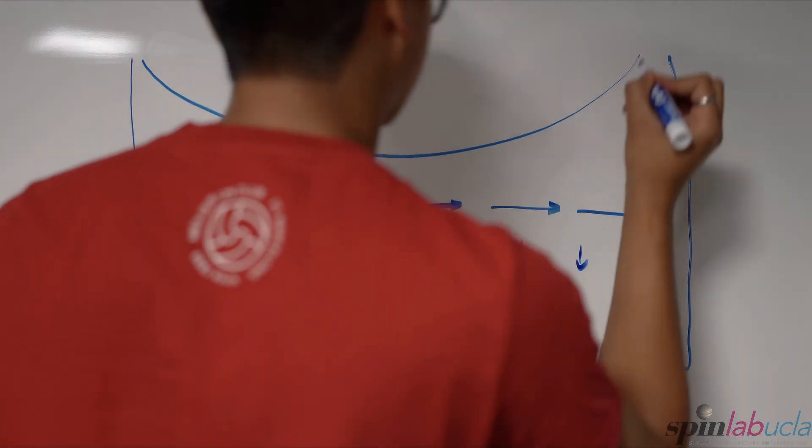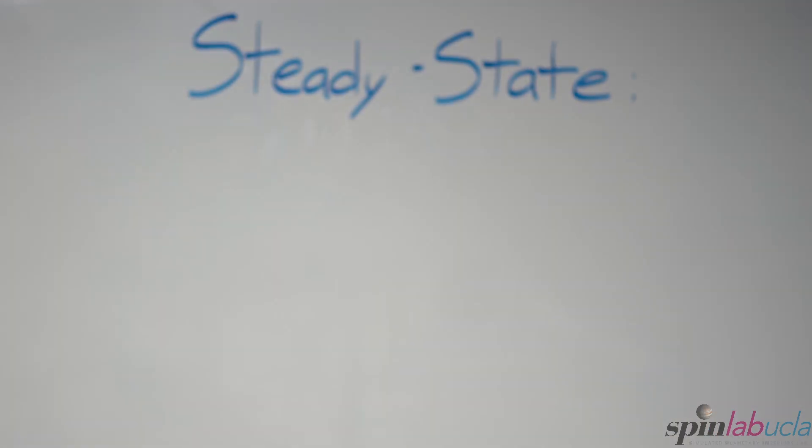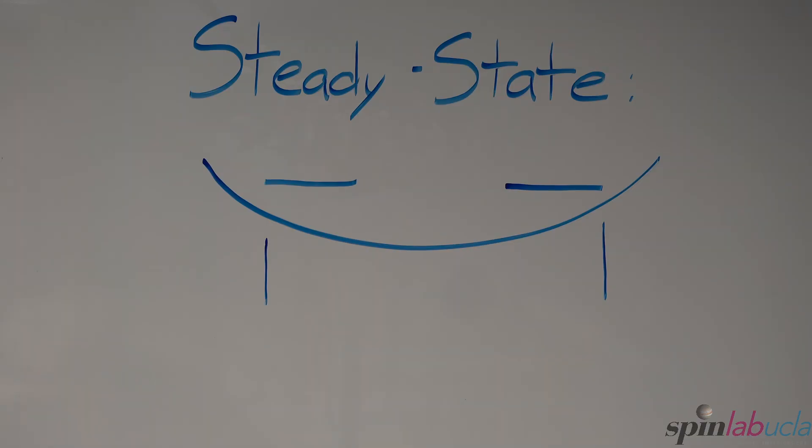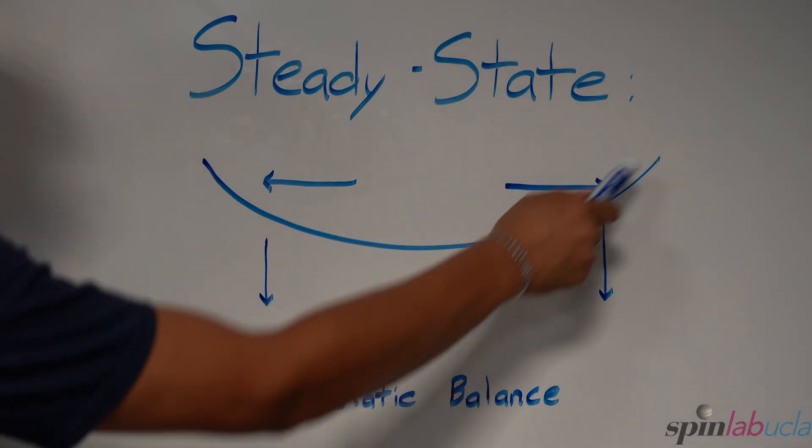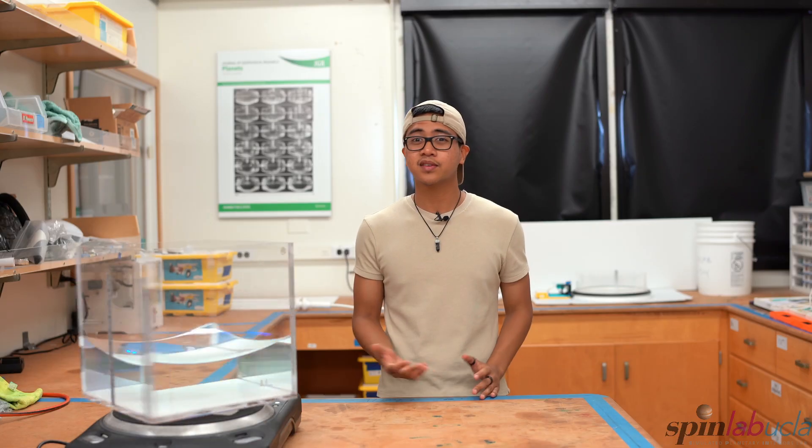At this point, the system has reached steady state. Gravity and centrifugal force are in what is called hydrostatic balance, which causes the water surface to settle into its paraboloidal equilibrium shape. It looks something like this—this is what a paraboloid looks like.